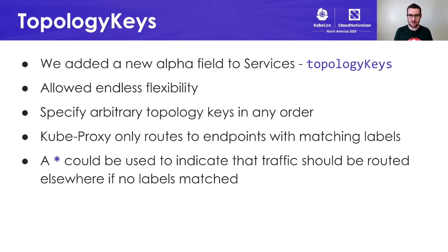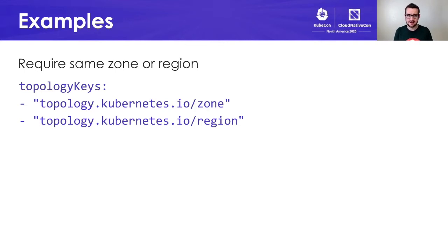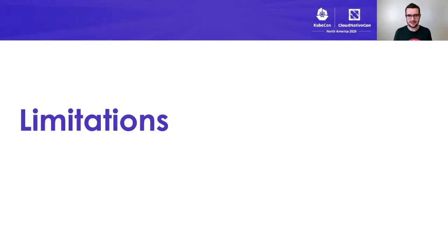Let's take some concrete examples of this configuration. First, if you wanted to require traffic stay in the same zone or region, your topology keys might look something like this. And if instead of requiring, you are fine with just preferring that traffic stay in the same zone or region, you would add that final wildcard at the end of the field. So this made sense — it was a very powerful API.